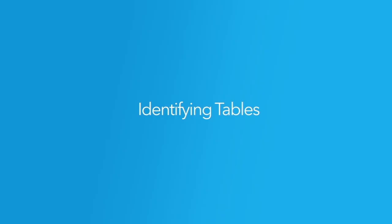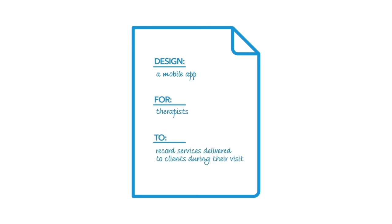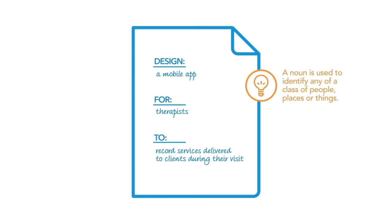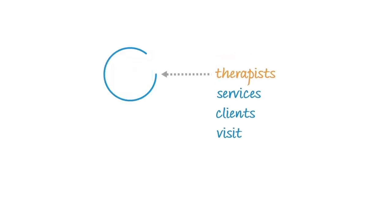In order to identify the necessary tables for your custom app, begin by reviewing your app's goal: design a mobile app for therapists to record services delivered to clients during their visit. Look for any nouns in the statement and determine whether or not your clinic will store data about that noun. In this case, there are five nouns. You are building a mobile app, but it's not something you'll track data about, so this term can be ignored.